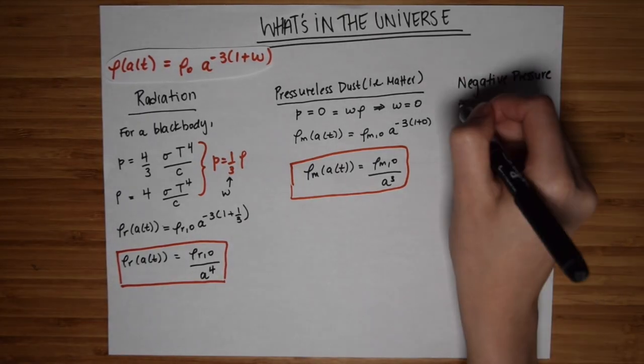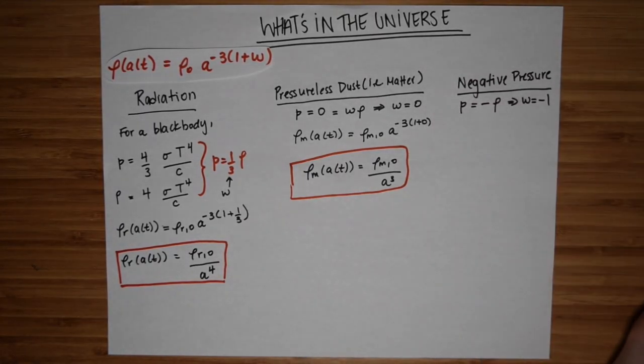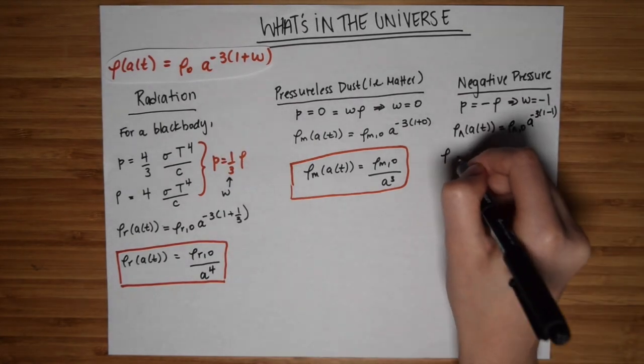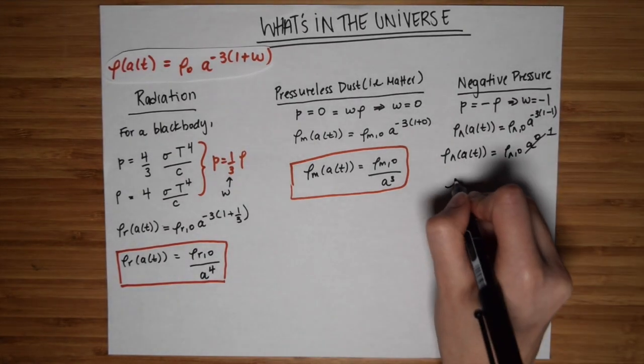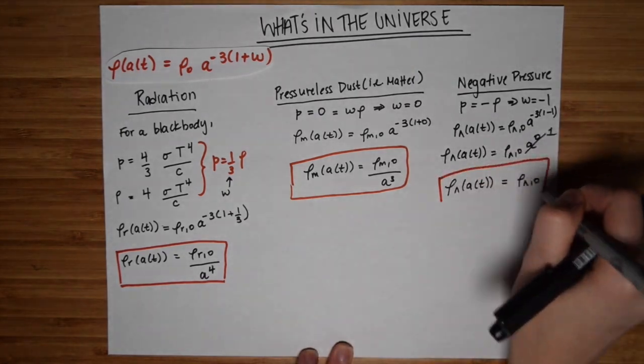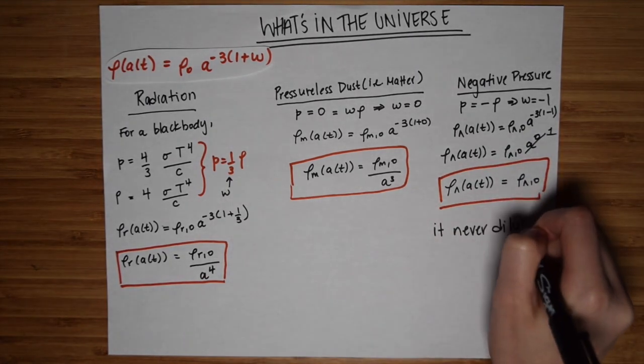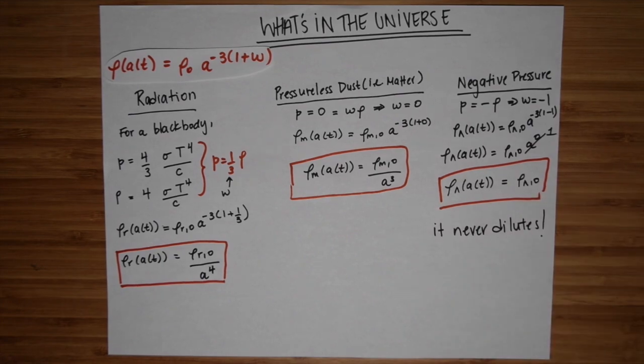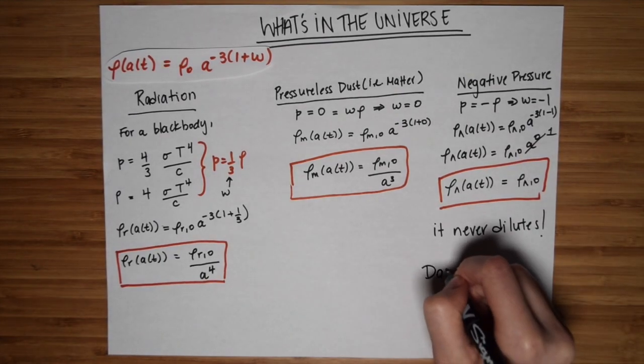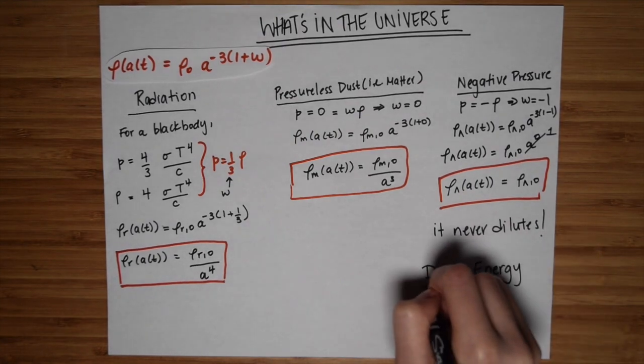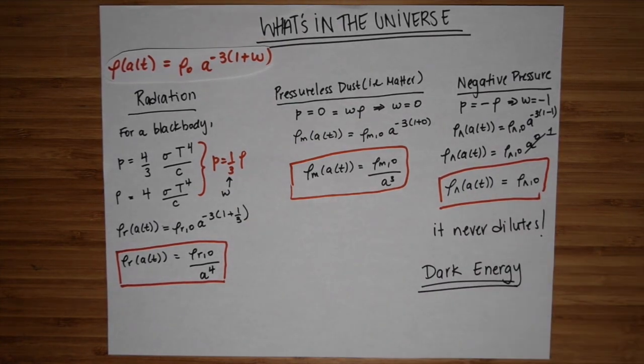Last but not least, we can consider a strange type of matter, where w is equal to negative 1. And so rho doesn't actually scale with A. This type of energy density never dilutes. And this should bother you. This is what we call dark energy. When people ask, what is dark energy? This is dark energy. It's just some sort of matter for which the scale factor does not decay. We don't truly know what it is physically, but this is how we characterize it.